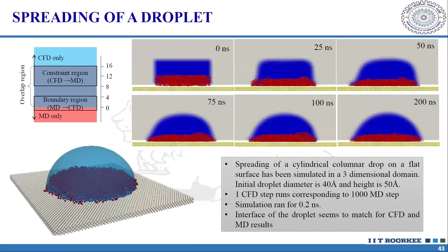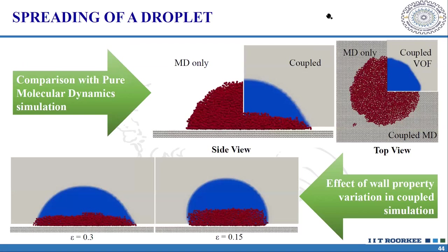The demonstration of the multi-scale approach combines volume of fluid and molecular dynamics. For this combined simulation, the contact angle does not need to be specified — the molecular scale determines the contact angle and feeds that information to the volume of fluid formulation. This makes the simulation more accurate with no dependence on empirical correlations for contact angle. Validations have been shown against complete MD and complete VOF methods, and the approach works for dynamic cases such as droplet translation under a chemical wettability gradient.